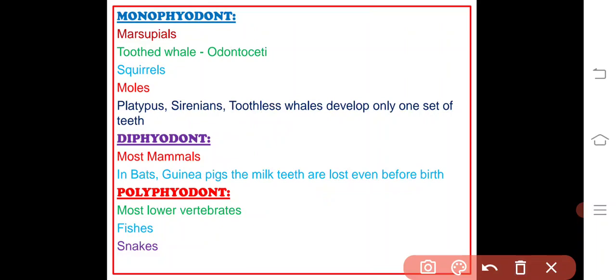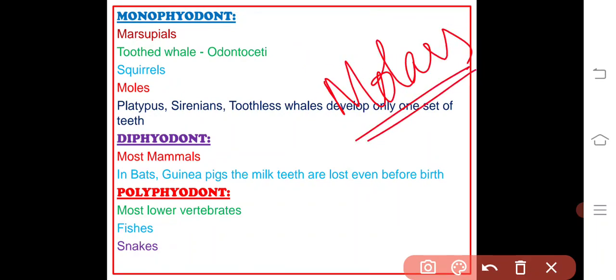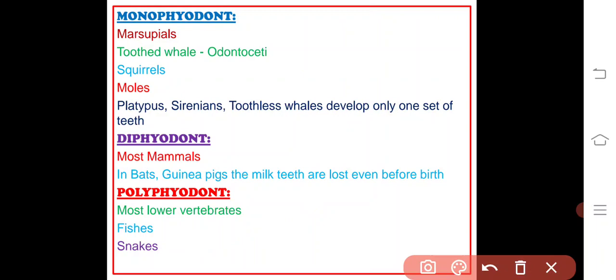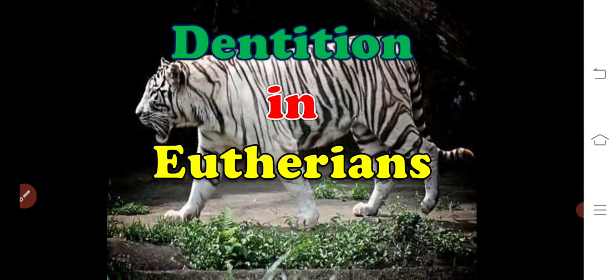In polyphyodont dentition, teeth are replaced continuously throughout the life. Most lower vertebrates replace their teeth generation after generation — for example, fishes, snakes, and most primitive vertebrates have the polyphyodont type of dentition.